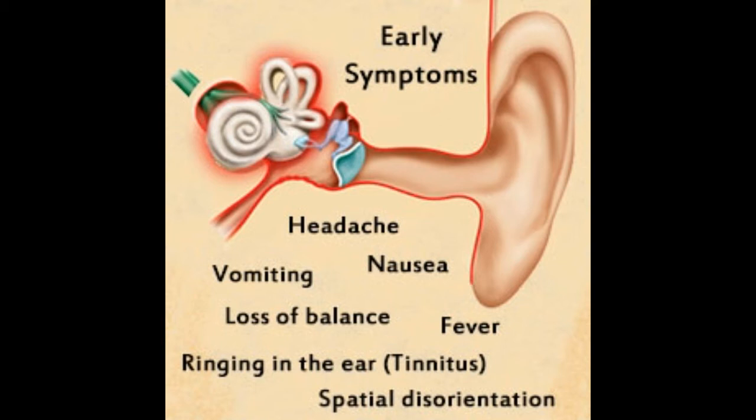Treatment: If the inner ear infection is caused due to a viral infection, then medications are usually prescribed to control nausea and vomiting. Rest and symptomatic treatment is all that is required for curing the infection. Antibiotics are prescribed in case of bacterial infection. In some cases, steroids are also prescribed to reduce inflammation in the inner ear. To reduce the symptoms, it is best that the patient lie still and avoid sudden movements and bright lights.